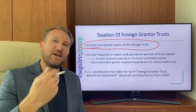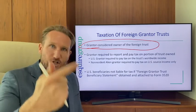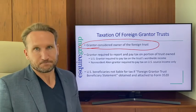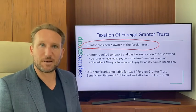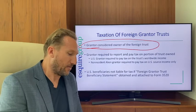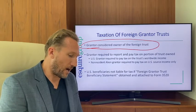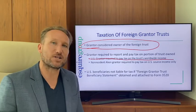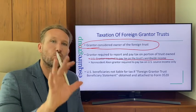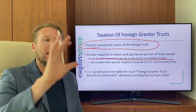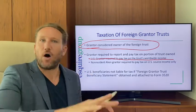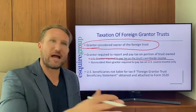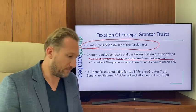If you have a U.S. grantor — a U.S. citizen, green card holder, or someone meeting the substantial presence test — they're required to report and pay tax on the trust's worldwide income, basically as if they owned everything in the trust personally.